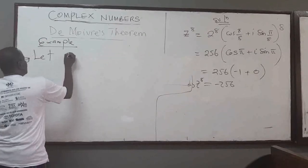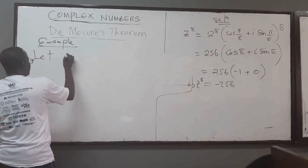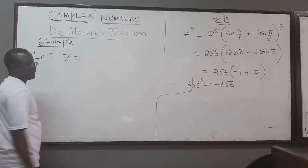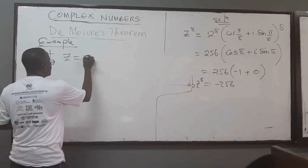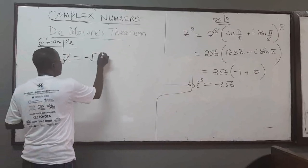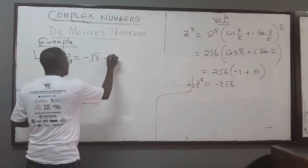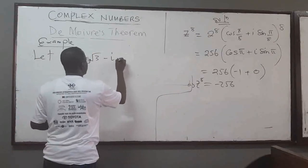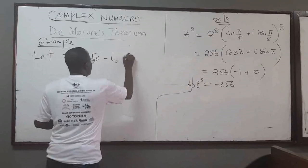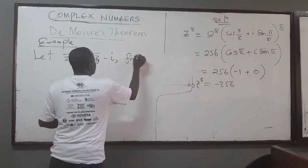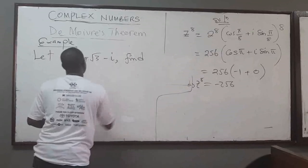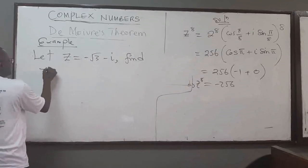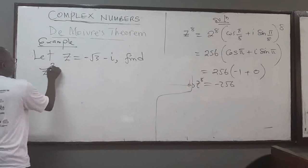Let the complex number z be equal to negative root 3 minus i. Find z raised to the power 3.